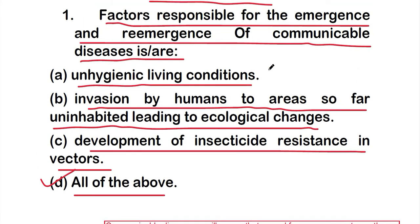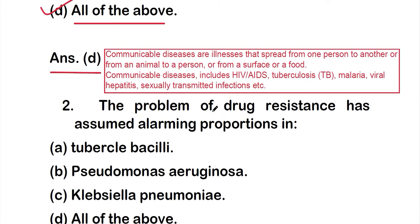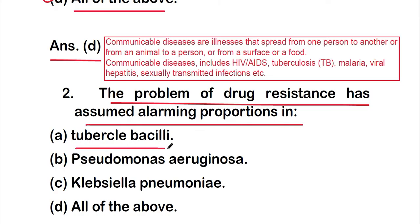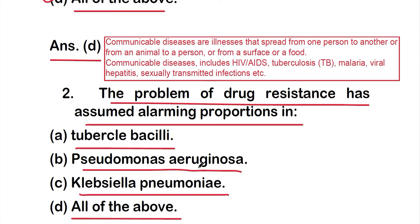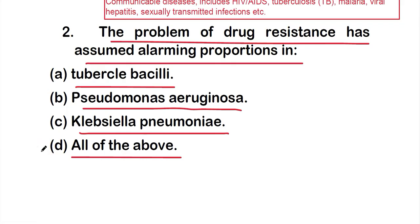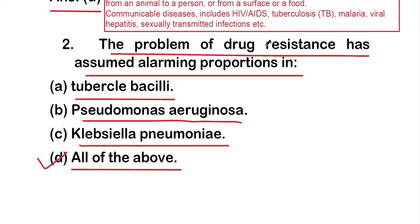Question 2: The problem of drug resistance has assumed alarming proportions in — option A: tuberculosis bacilli; option B: Pseudomonas aeruginosa; option C: Klebsiella pneumoniae; option D: all of the above. The right answer is option D. Drug resistance is a genuine problem for all these bacteria, as they are resistant to multiple drugs.